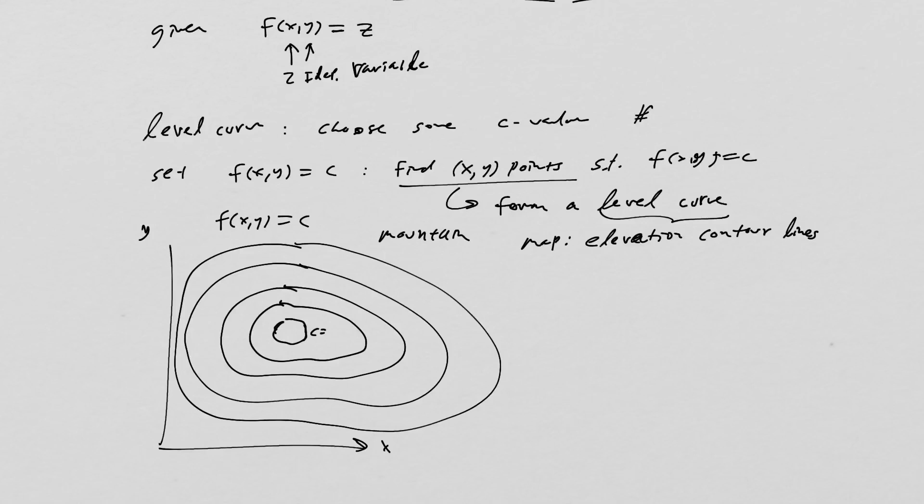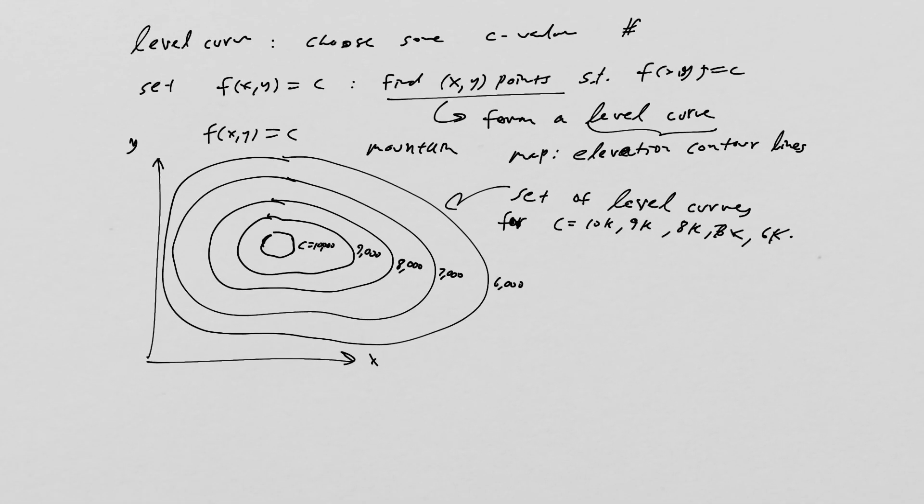Here, this is maybe c equals 10,000 feet. Maybe this is 9,000 feet here. This is 8,000 feet, and so on. As you get higher and higher up the mountain. So that would be a good example of a set of level curves for c equals 10k, 9k, 8k, 7k, and then 6k, and so on and so forth.